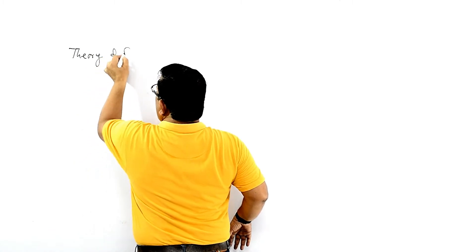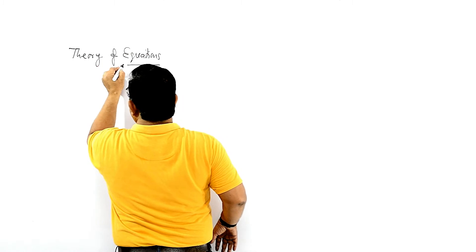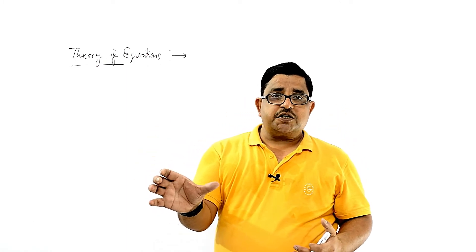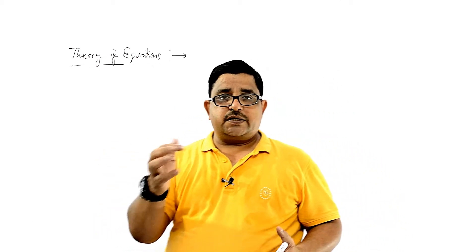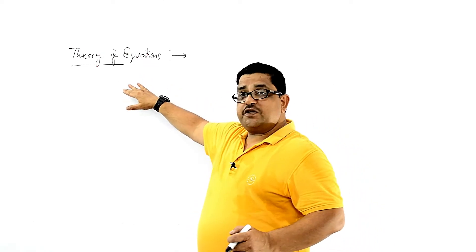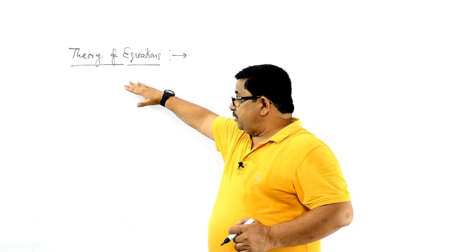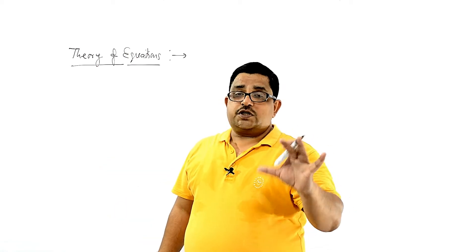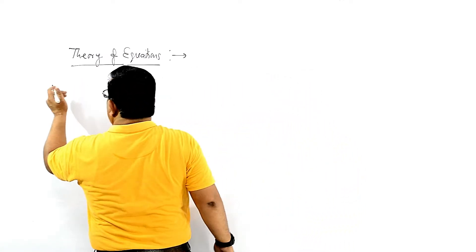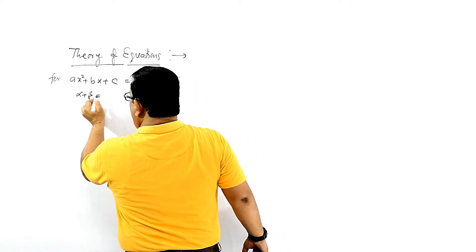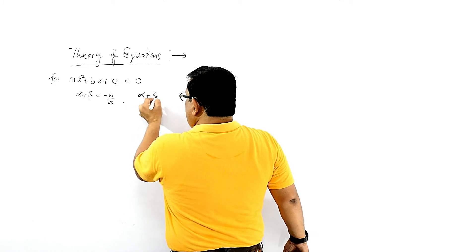This is the theory of equations. We know for the quadratic equation, and then we will see the cubic equation, the bi-quadratic equation, or any polynomial equation of degree n — its roots and its coefficients are related. For the quadratic equation ax² + bx + c = 0, its roots alpha and beta: their sum is given by -b/a and product of the roots is given by c/a.